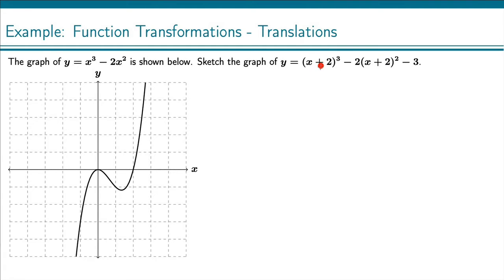There are a couple things going on here. First of all, notice that in this function, we still have something cubed minus 2 times something squared, which is the form of the original function.